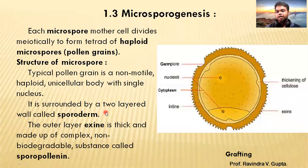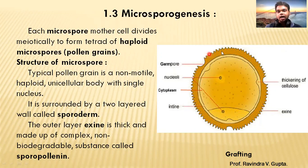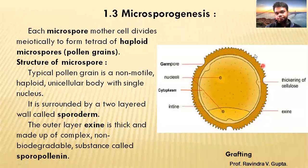It is surrounded by two layers of wall, called the sporoderm. You can see that two walls are present: the outer layer is exine and the inner layer is intine. The dark-colored, thick wall that you can see in the diagram is called exine, and the part covering the inner side is the intine.